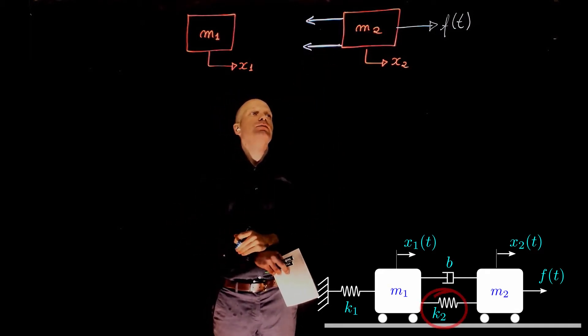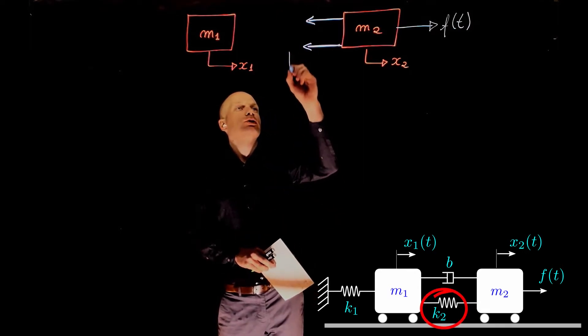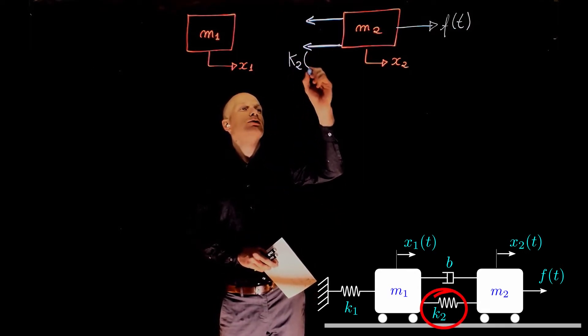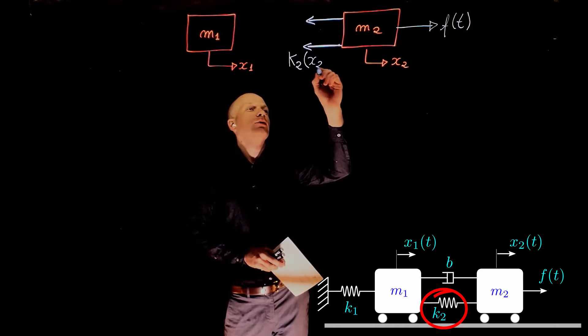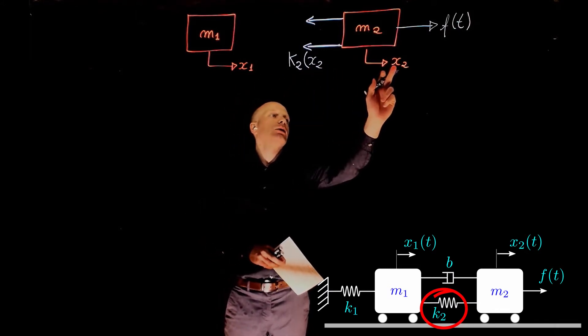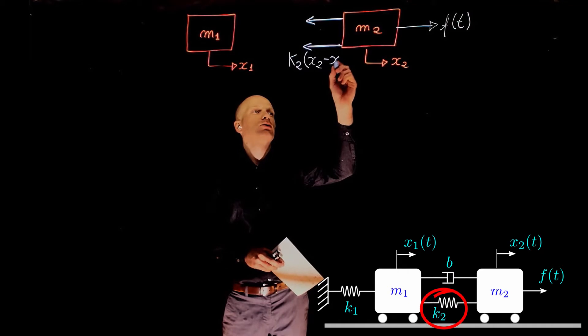The spring here will create a force k2 times the relative compression of that spring, that is x2 minus x1.